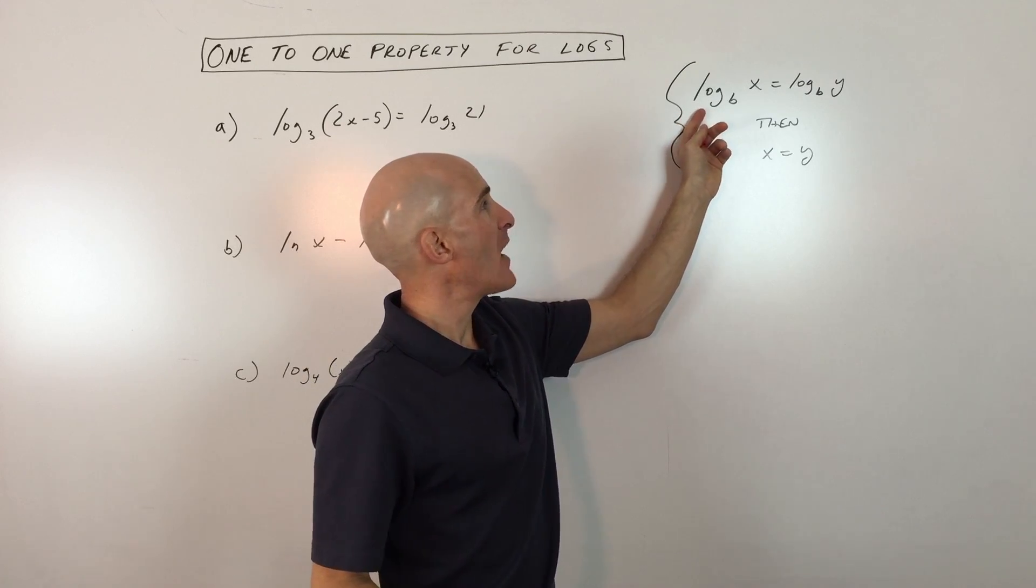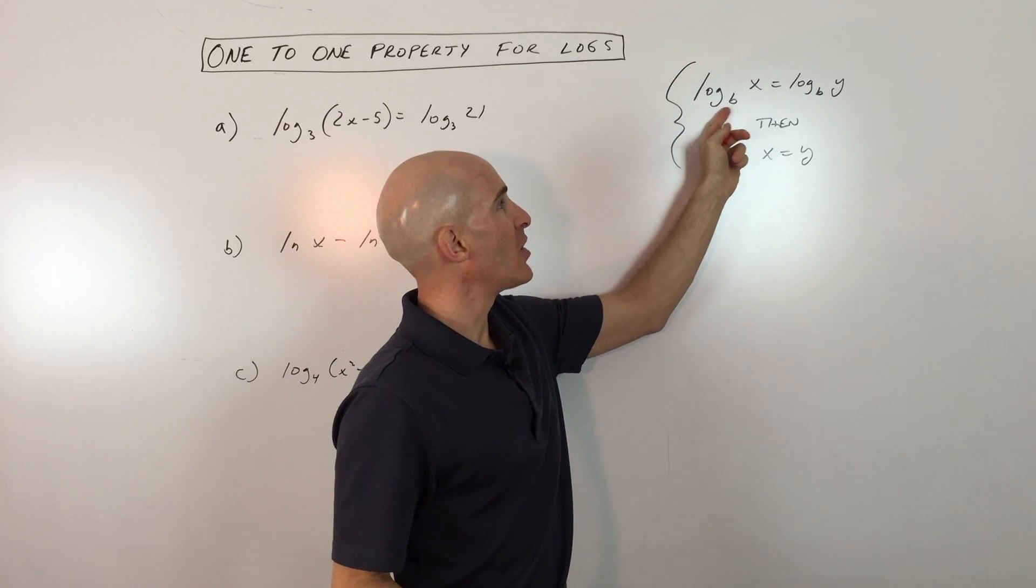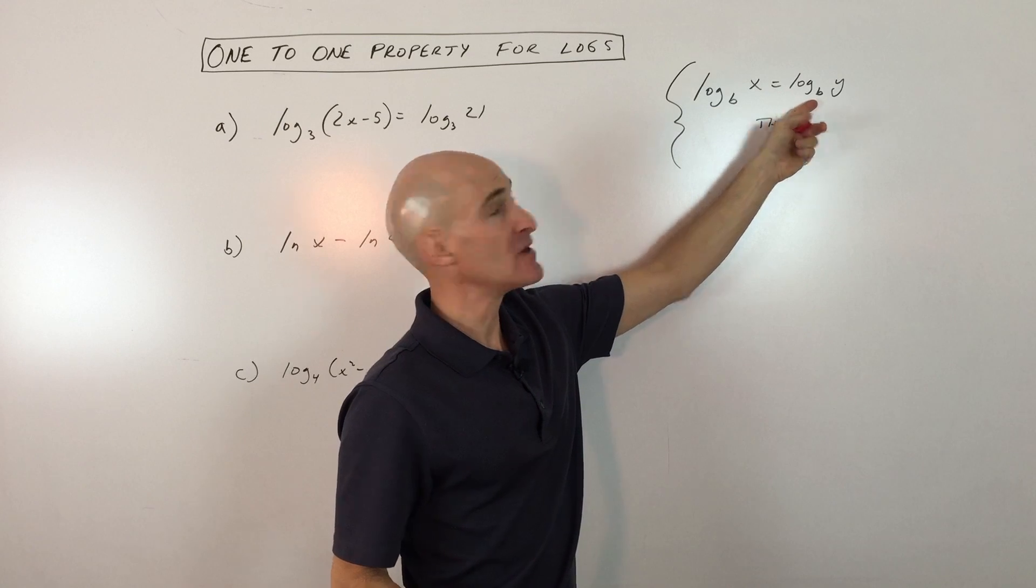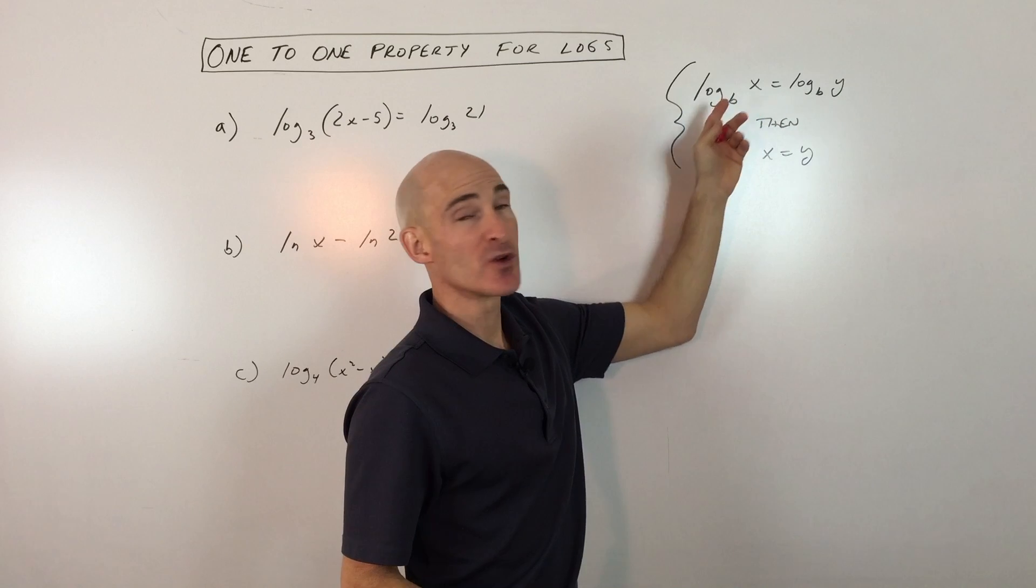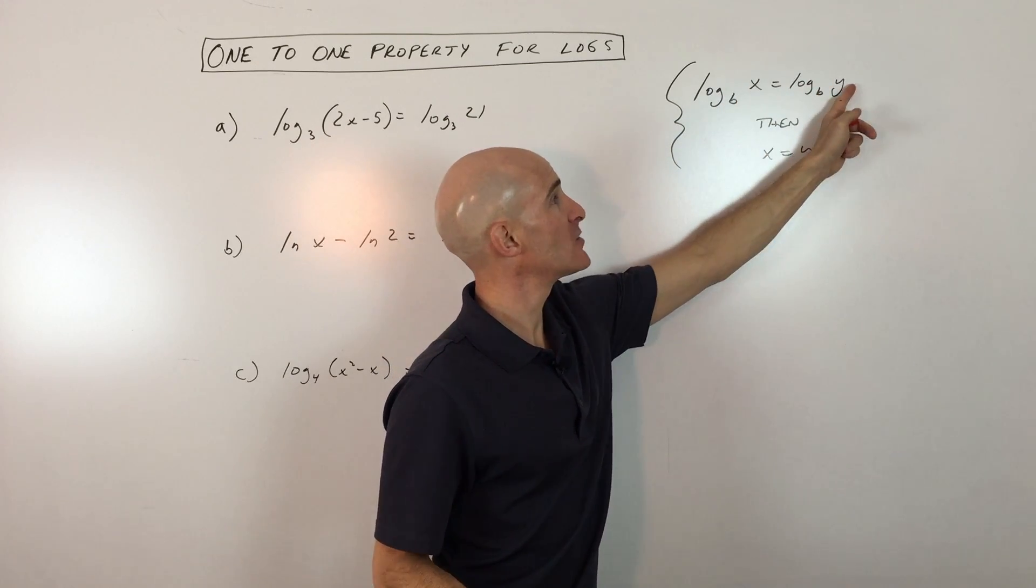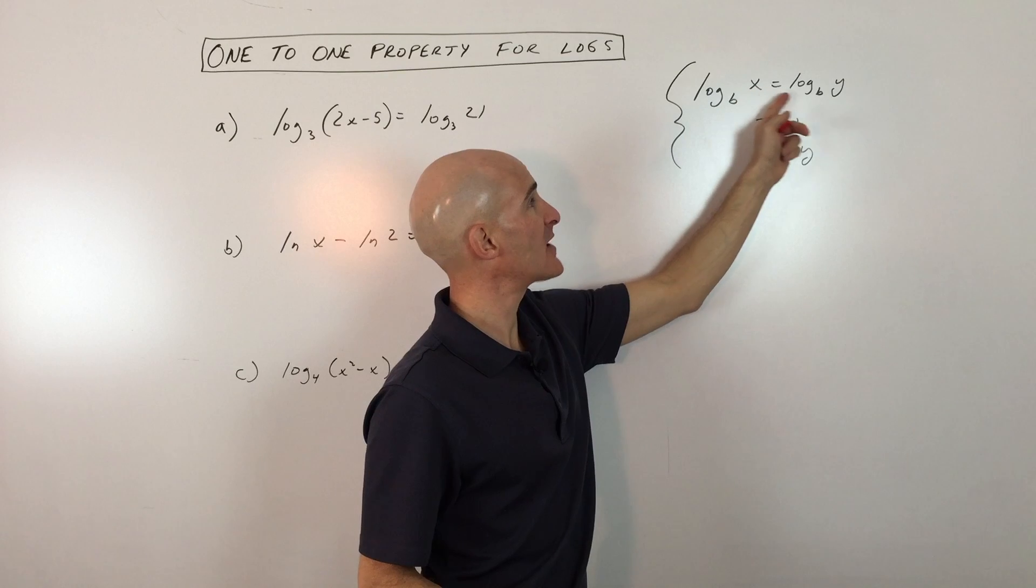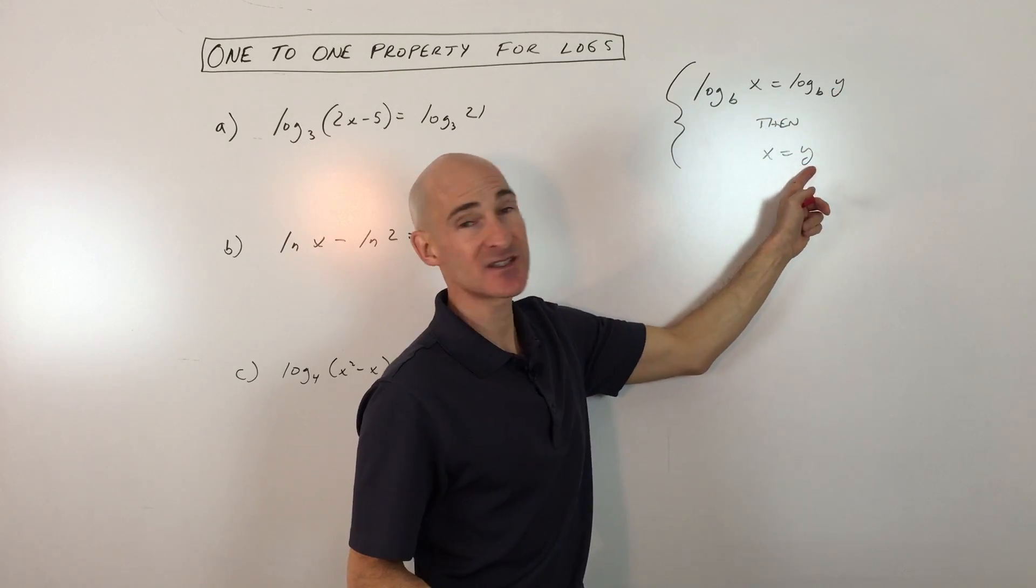Basically what it is, is when you have the log of the same base - log base b equals log base b - these bases are the same. These logs are equal to one another, which means that the arguments, this quantity here is equal to this quantity here. So log base b of x equals log base b of y, then x must equal y.